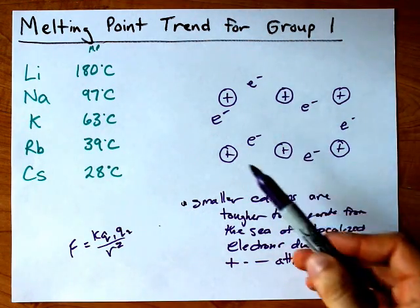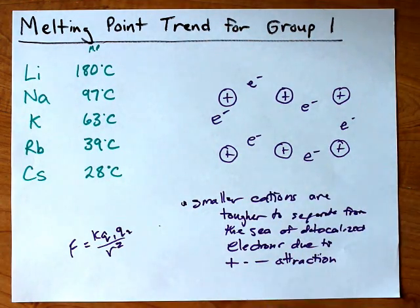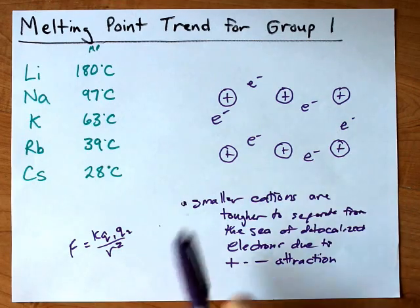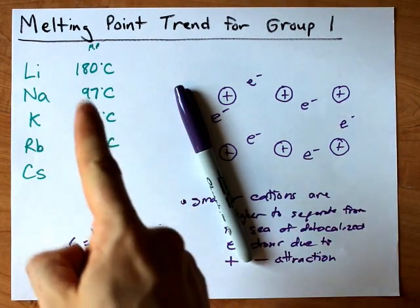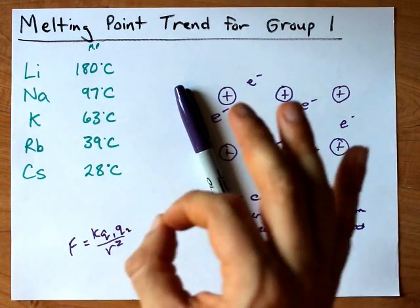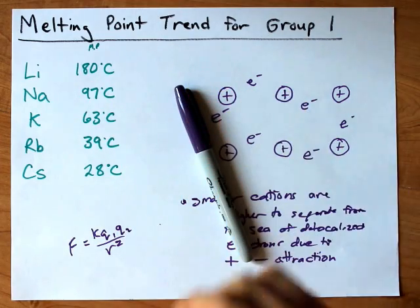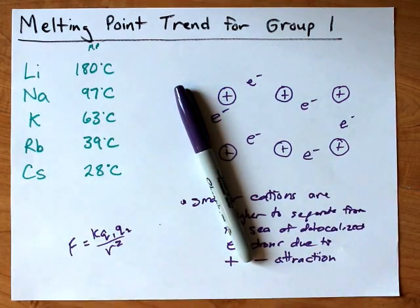And all of this is predicated on this being the structure of a metallic solid. In any case, that's the why. And by the way, boiling points for the alkali metals follow the same trend, although they are hundreds of degrees higher. All right, best of luck.